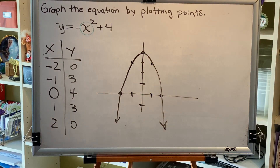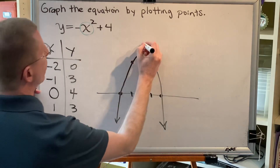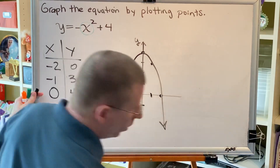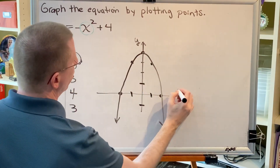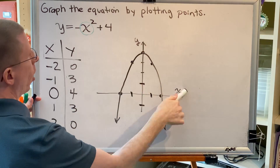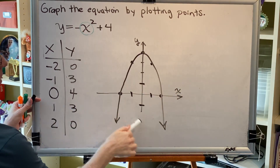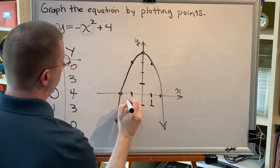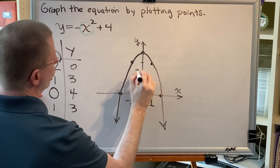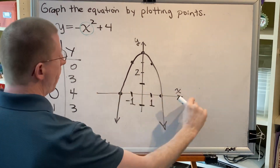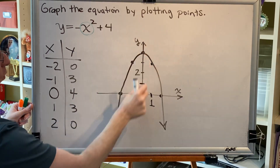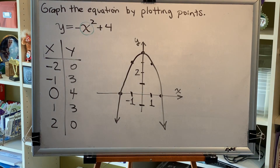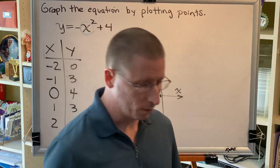Therefore we have created our graph. The only thing that our graph needs now is some finishing touches: we need to label the y-axis with a y at the top, and label the x-axis with an x at the right. Notice that the x and y are put where the values are positive. We need a scale on our graph — we'll call this 1 and negative 1, and we'll call this 2. As long as there's at least one number on the x-axis and the origin, and at least one number on the y-axis and the origin, your scale is discernible by your reader. That's the end of this problem — let's do another one.